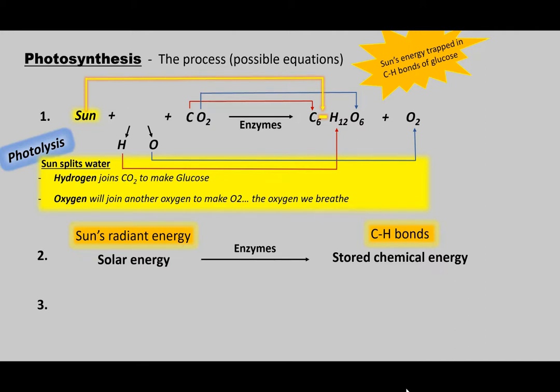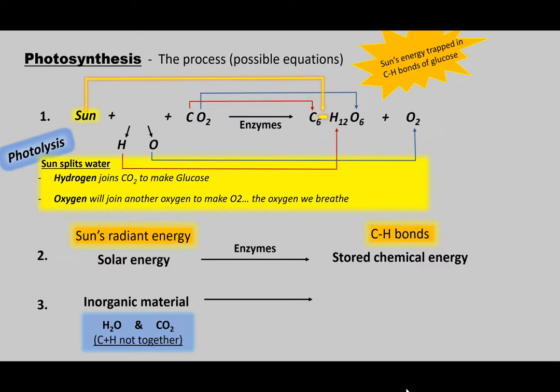The third way to look at photosynthesis is that all reactants going into it — water and carbon dioxide — are inorganic because they do not contain carbon and hydrogen together. Photosynthesis takes that inorganic stuff and makes it into an organic nutrient called glucose, where carbon and hydrogen are together. Anything organic must contain carbon and hydrogen. Again, this process is sped up by enzymes.